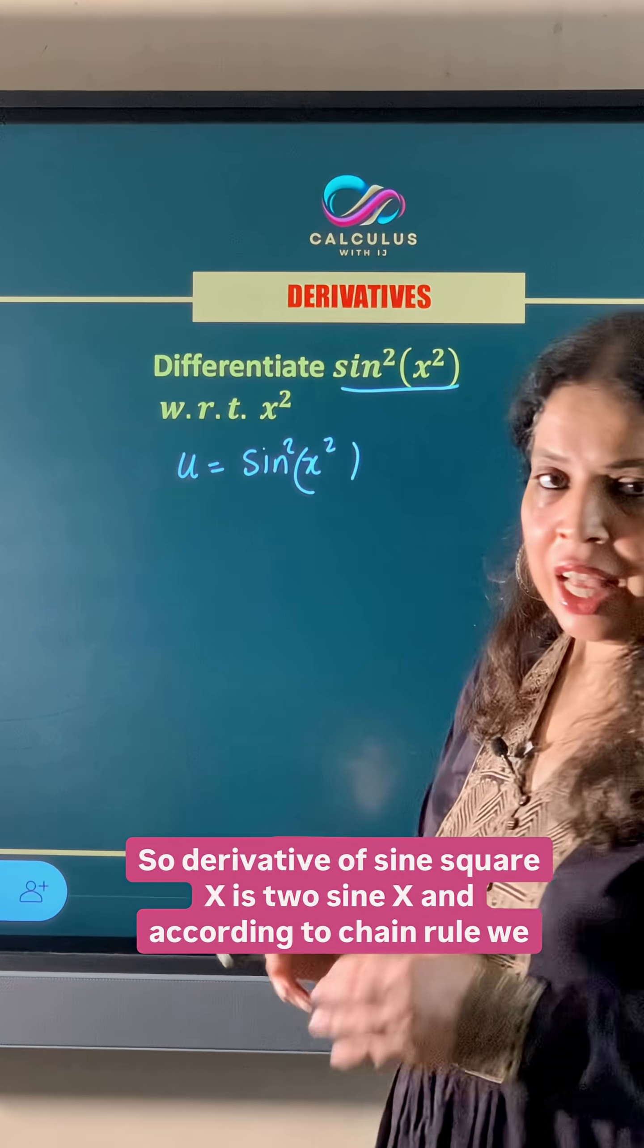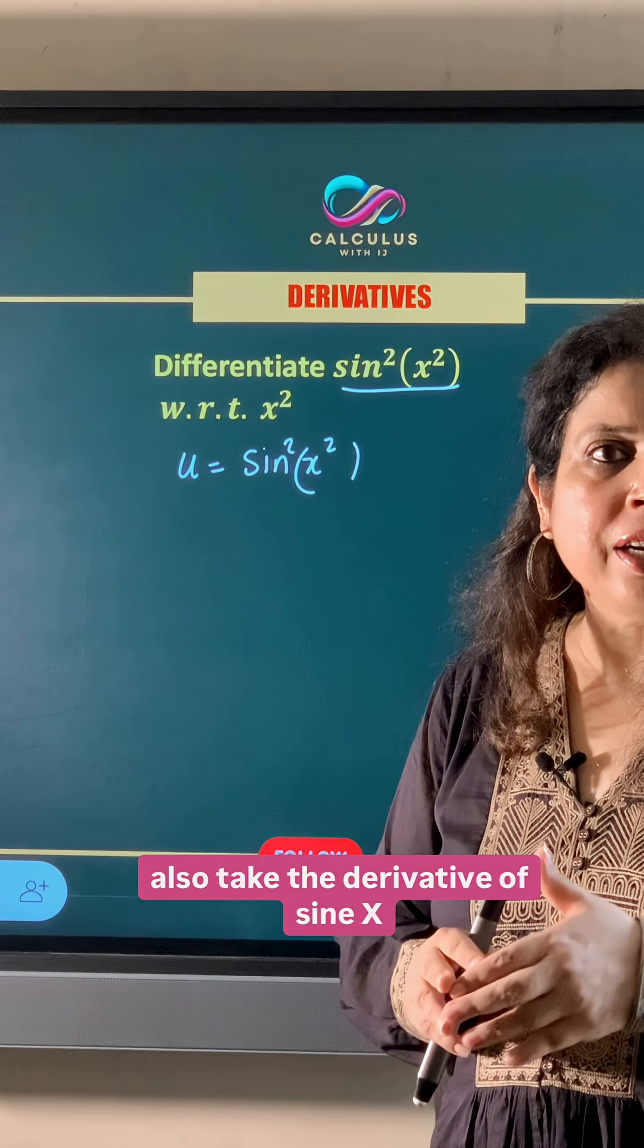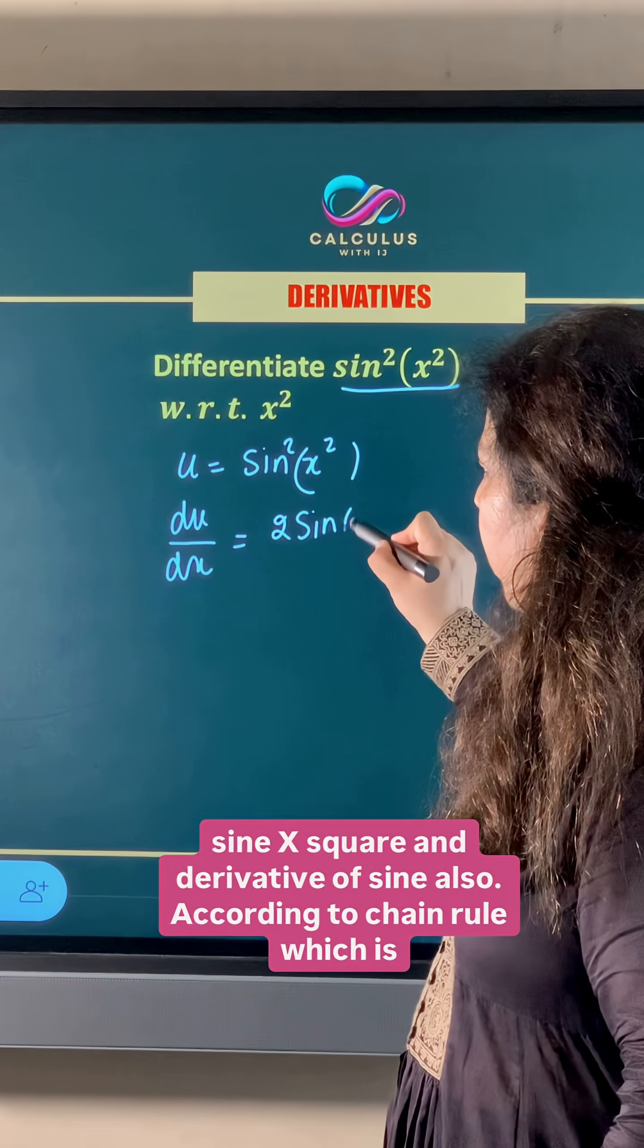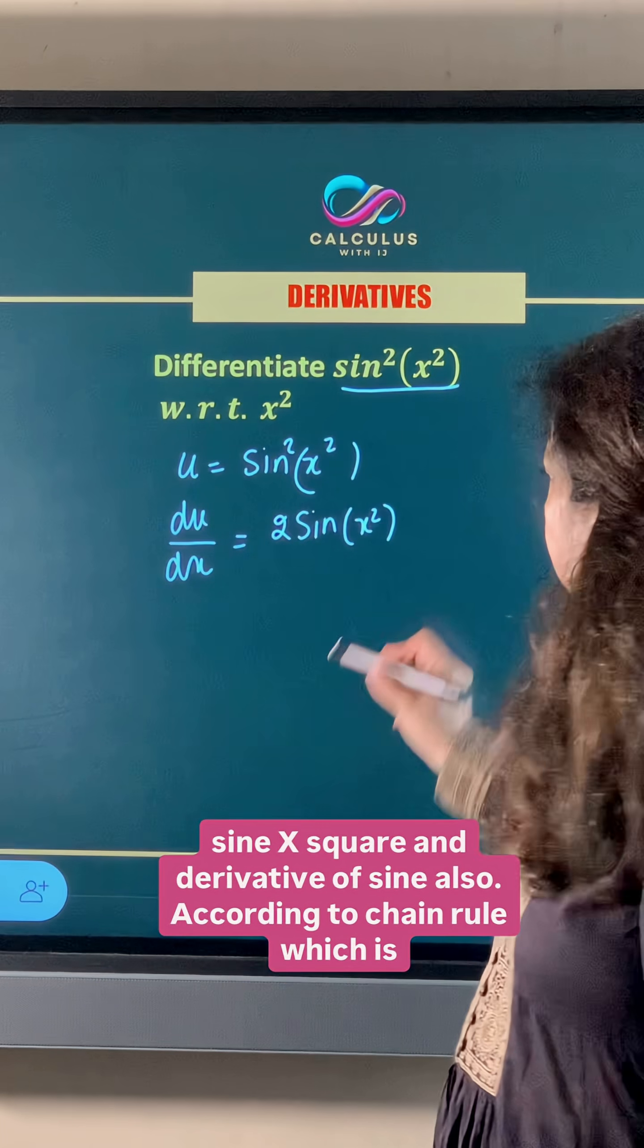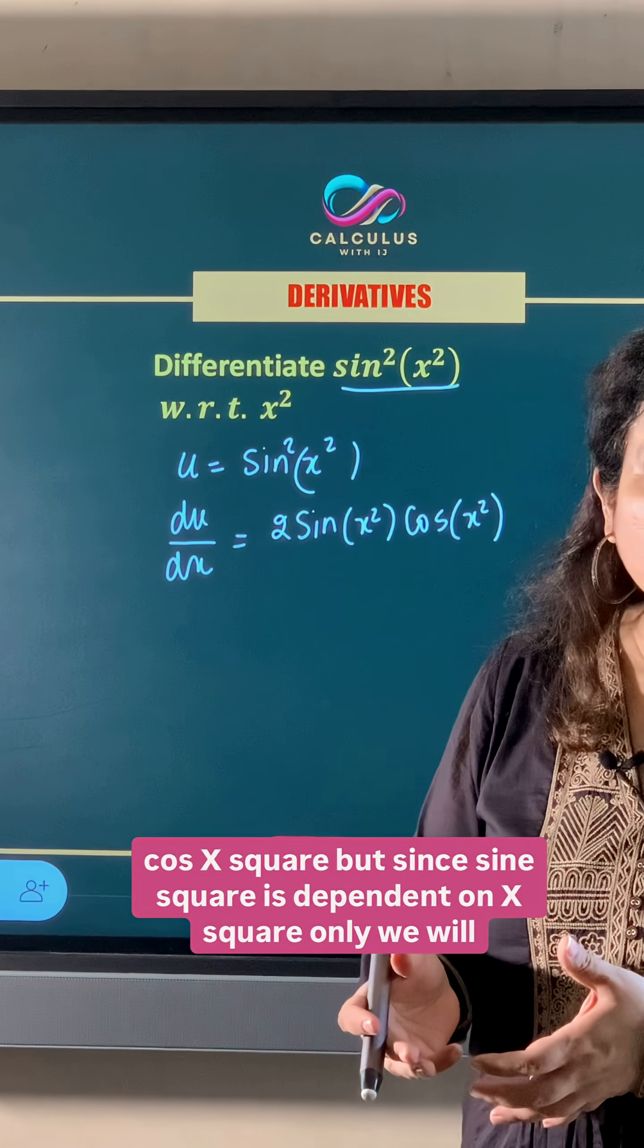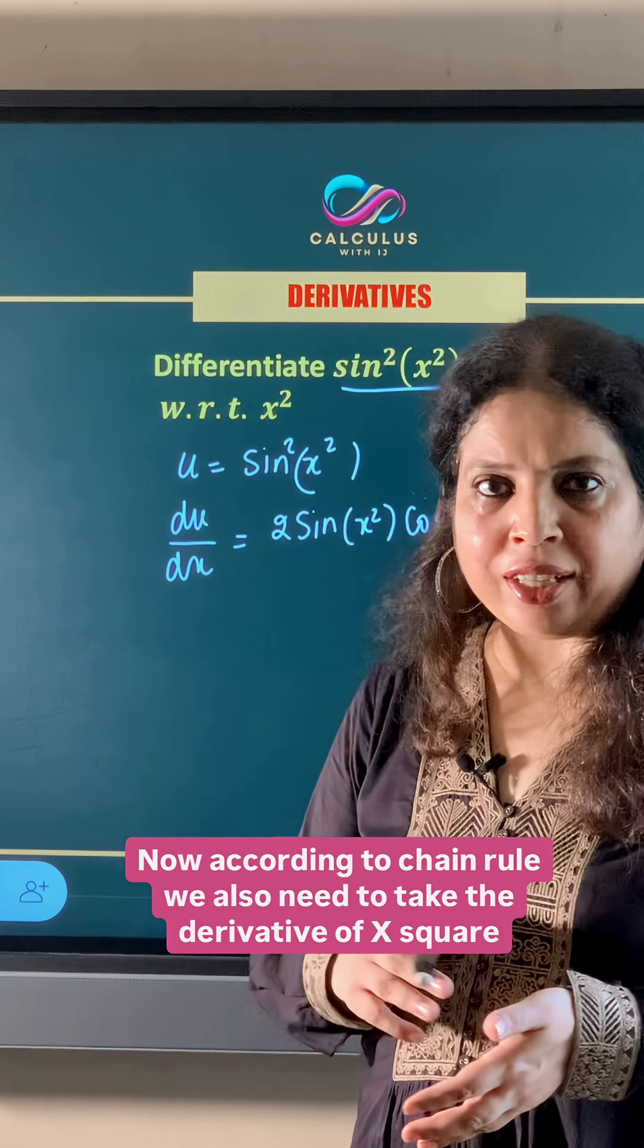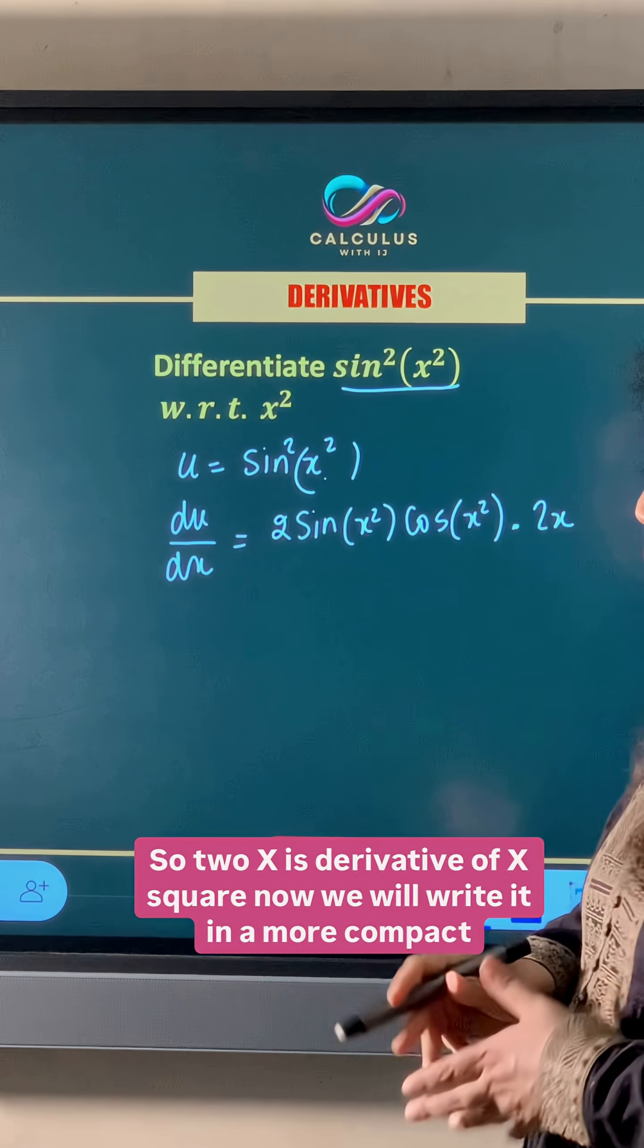So derivative of sin²(x) is 2sin(x), and according to chain rule we also take the derivative of sin(x). Now in this case when we differentiate it with respect to x, this becomes 2sin(x²), and derivative of sine also according to chain rule which is cos(x²). But since sine square is dependent on x² only, we will take the angles as x² only. Now according to chain rule we also need to take the derivative of x² which is 2x. So 2x is derivative of x².